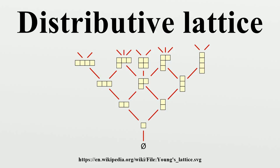A further important representation was established by Hilary Priestley in her representation theorem for distributive lattices. In this formulation, a distributive lattice is used to construct a topological space with an additional partial order on its points, yielding her ordered Stone space. The original lattice is recovered as the collection of clopen lower sets of this space. As a consequence of Stone's and Priestley's theorems, any distributive lattice is isomorphic to a lattice of sets. However, the proofs of both statements require the Boolean prime ideal theorem, a weak form of the axiom of choice.